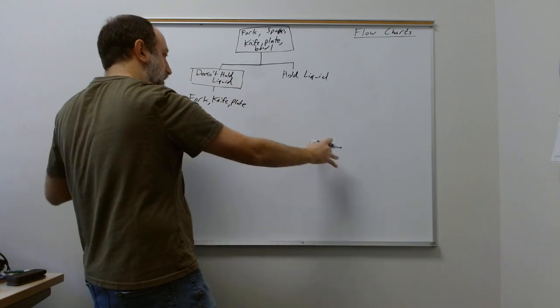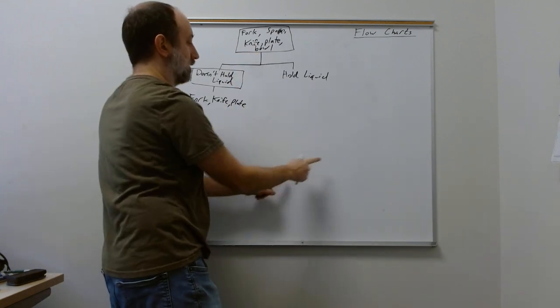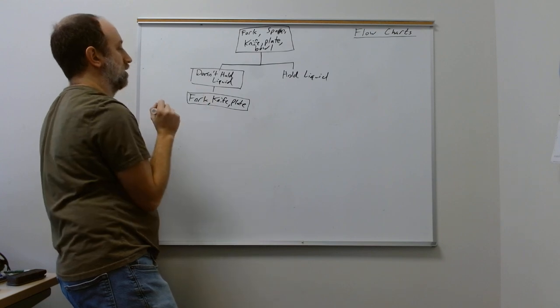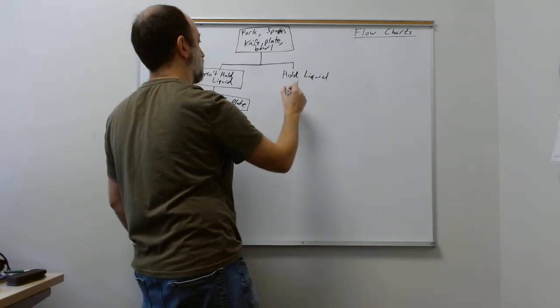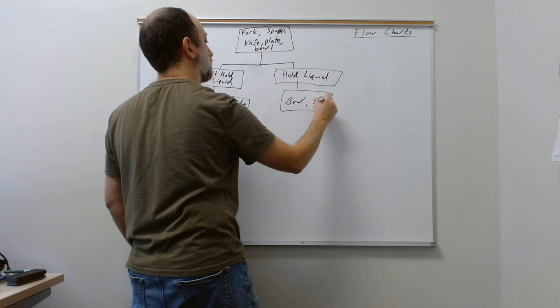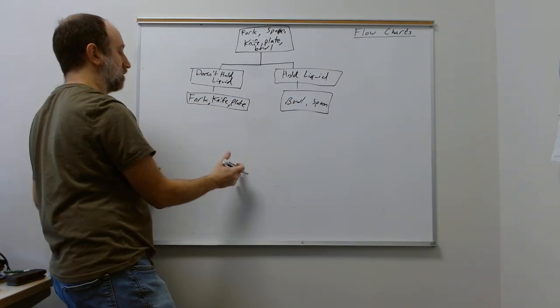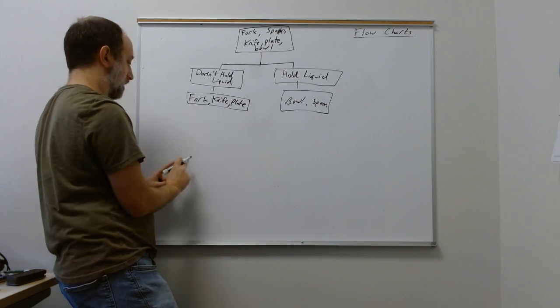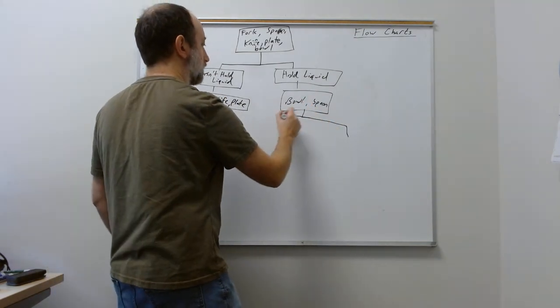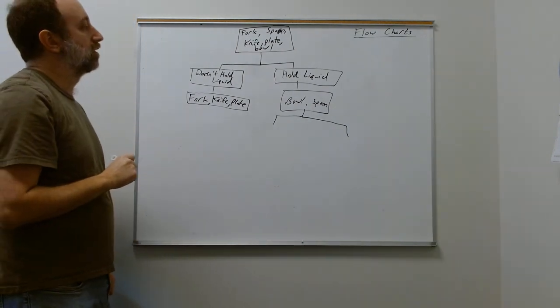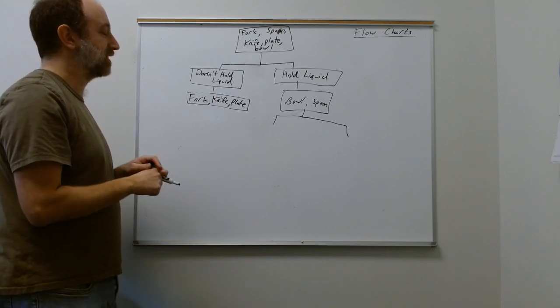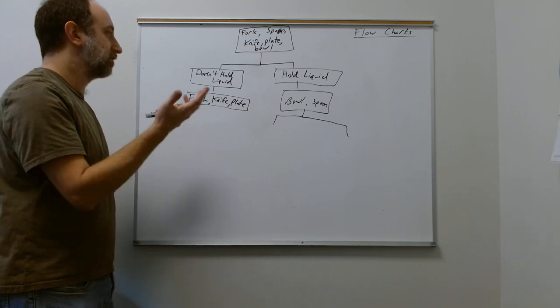By the time we finish branching this all the way out, you're going to have just one of these at a time. But for now, we can just leave the group names that we have here on this side. Fork, knife, plate. So which ones do hold liquid? I guess the bowl and the spoon. Okay, so next we keep going until we have branched this out to only have a box at each spot that has just one name in it. I'll show you what I mean. So how can we separate the bowl from the spoon? You're going to need another pair of characteristics. Got anything? Let me see. Think about it for a second. Put whatever you want. You don't have to put the same thing I'm going to put.